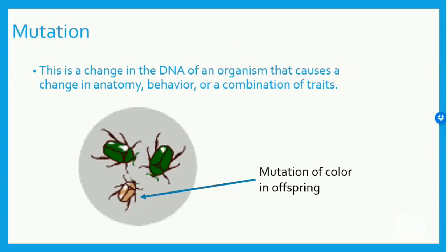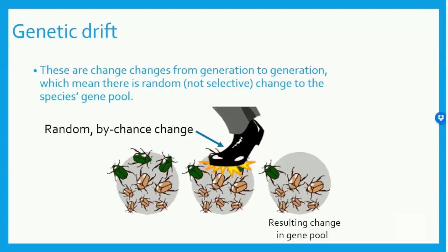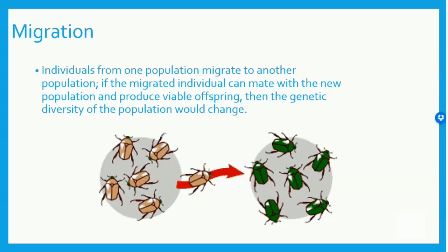Mutations are changes in the DNA of an organism that cause a change in anatomy, behavior, or a combination of traits. In this example, the gold-colored beetle has a mutation to its color genes. Genetic drift refers to the random changes from generation to generation — there aren't any selective pressures. For example, a person accidentally stepping on some beetles changes the color proportions of the population by chance. Migration is when individuals from one population migrate to another population. If the migrated individual mates with the new population and produces viable offspring, then the genetic diversity of the population would change and potentially lead to the evolution of a new species.